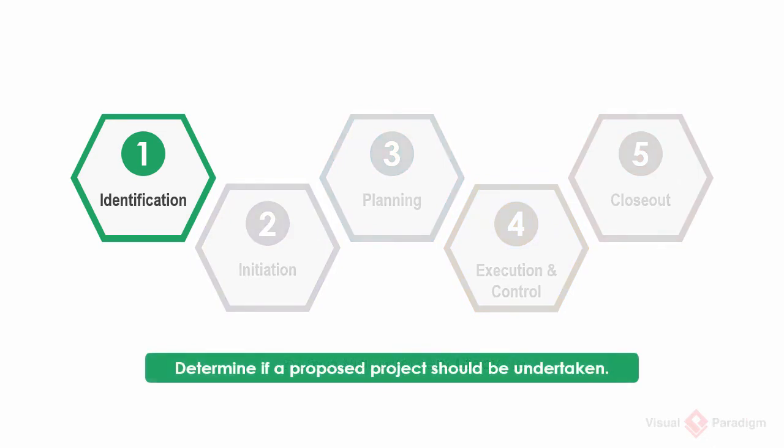The first phase is the identification phase. Its primary objective is to determine whether a proposed IT project should be undertaken. Activities of this phase involve identifying solutions and providing recommendations based on the analysis of cost and benefits for each possible solution. By the end of this phase, a project proposal will be developed. A project sponsor evaluates it and determines if the project should be undertaken. Projects receiving formal sponsorship progress to the next phase of the lifecycle.